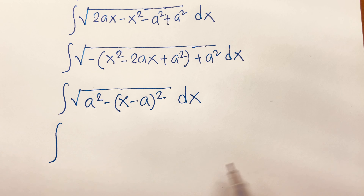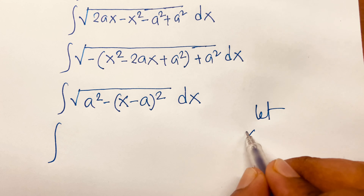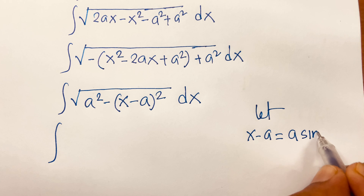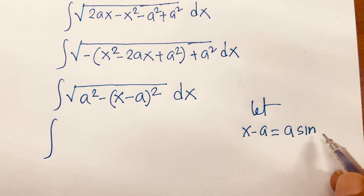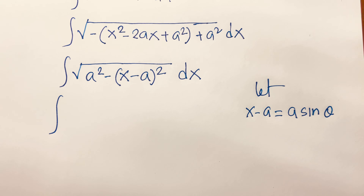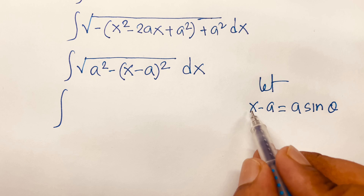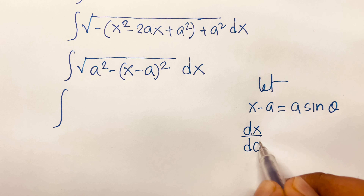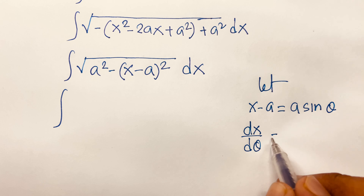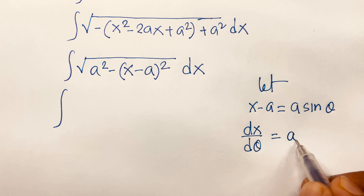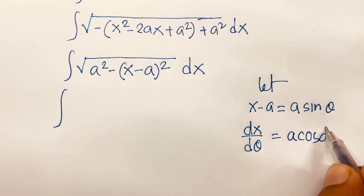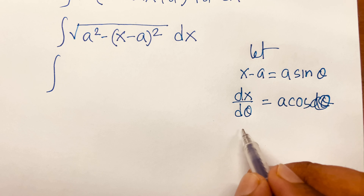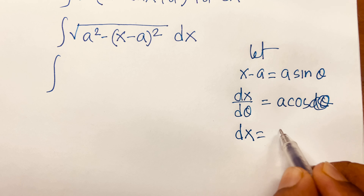Then I can write the integral of √[ −(x² − 2ax + a²) + a² ] dx. Here minus is common, so: minus gives plus x², minus gives minus 2ax, and minus times minus gives plus a². Then that a² remains outside the bracket.